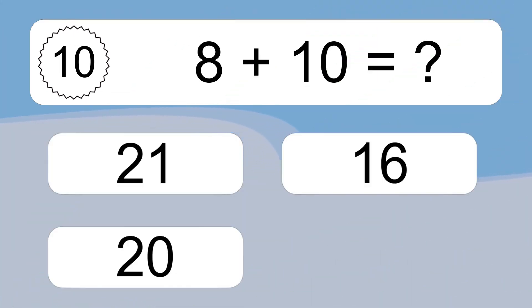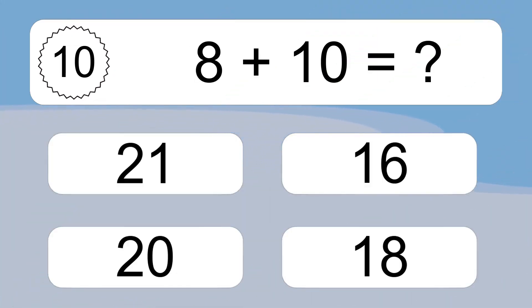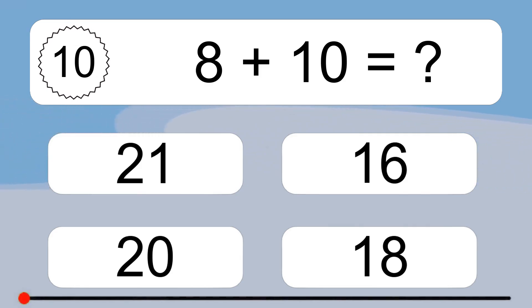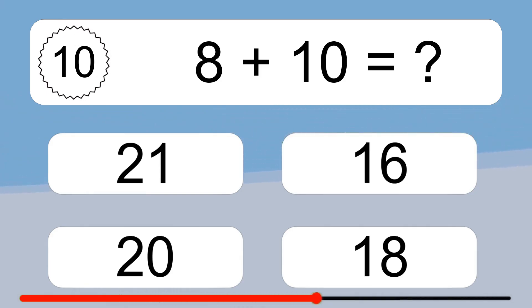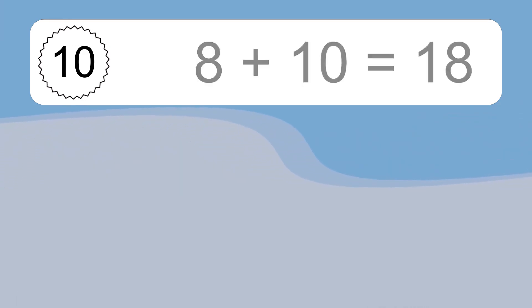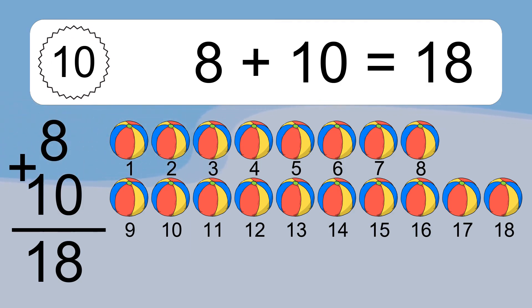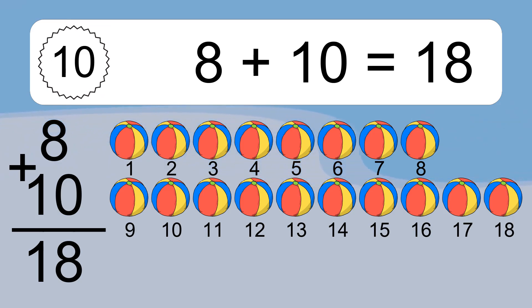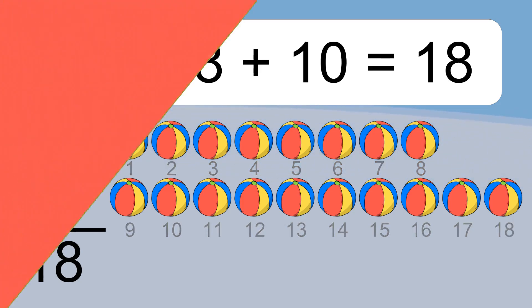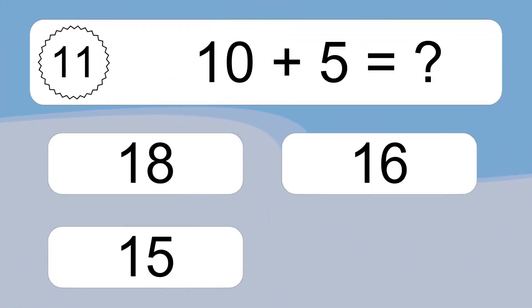8 plus 10 equals what? 8 plus 10 equals 18. Let's count it: 1, 2, 3, 4, 5, 6, 7, 8, 9, 10, 11, 12, 13, 14, 15, 16, 17, 18. 10 plus 5 equals 15.